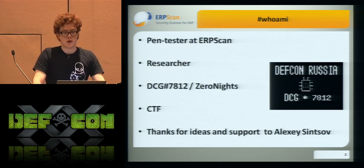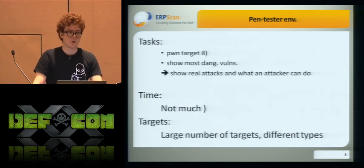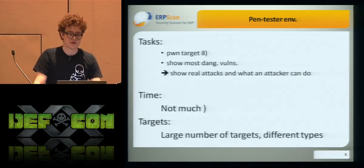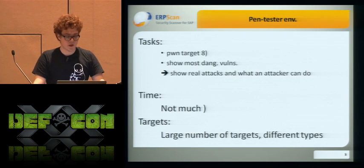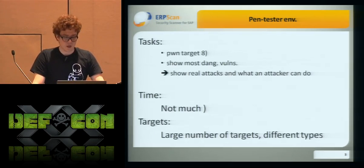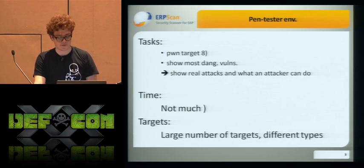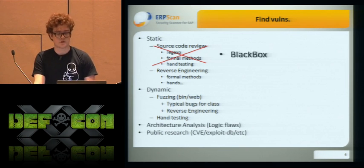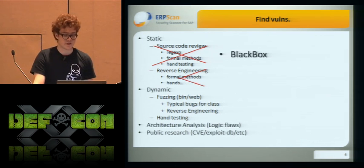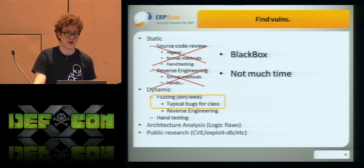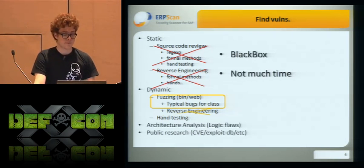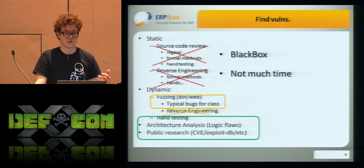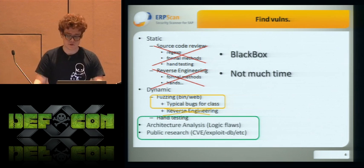Before we talk about VMware, I'd like to talk about penetration testing in general. The main goal of a pentest is to show weak elements in infrastructure — how to hack the system, why we can hack it, and how we can hack it. We usually have a large number of targets of different types, and unfortunately not much time. So we can't use all bug-hunting methods like source code review, because that takes a lot of time and requires source. Reverse engineering, same reason. We can use a little fuzzing if we have a binary. But usually we use logic — looking for logic flaws and searching public research.